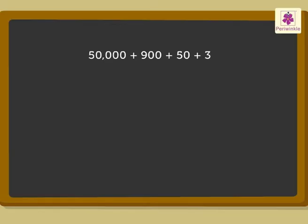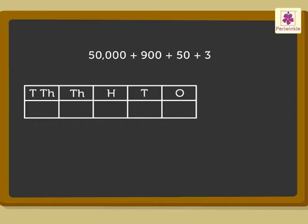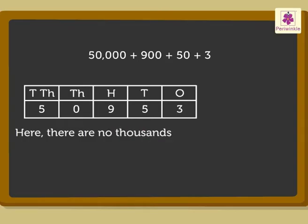Now, once again, write the number in the place value chart like this. Here, there are no thousands. So, we have written zero in the thousands place.